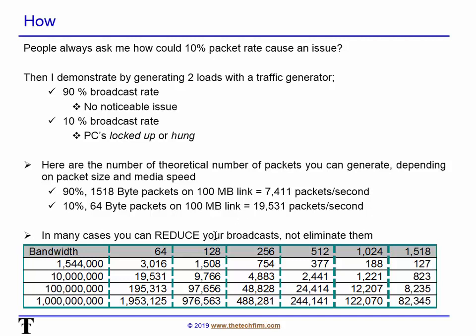If you take a look here, you'll see that a 90% broadcast or multicast storm of 1518-byte packets — that's the maximum Ethernet size for most clients, not including jumbo frames — on a 100 Mbps link, keeping things conservative, that's 7,411 packets per second. If you have a gig link, just move that comma over and it's 74,000.